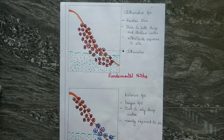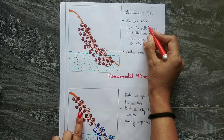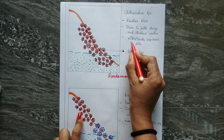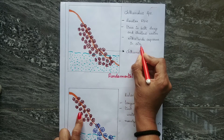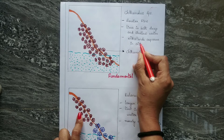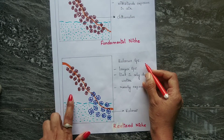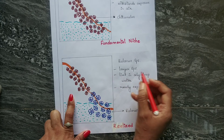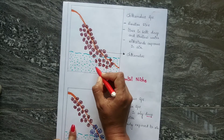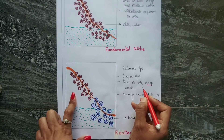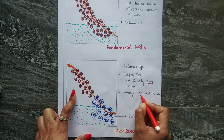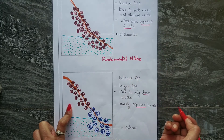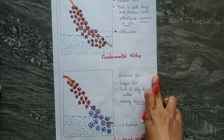Chthamalus is a smaller species that can live in both deep and shallow water, and it can withstand exposure to air. Balanus is a larger species that lives only in deep water and is rarely exposed to air. In simple terms, Chthamalus can survive dry conditions better than Balanus, so it can live higher up on the rocks and is more tolerant of physical stress.